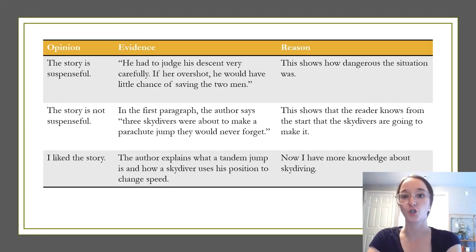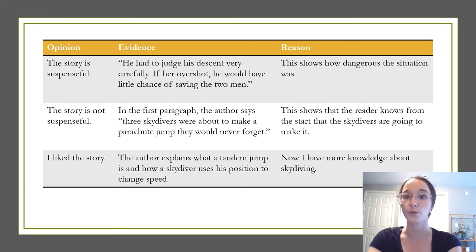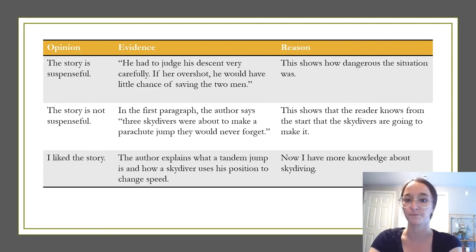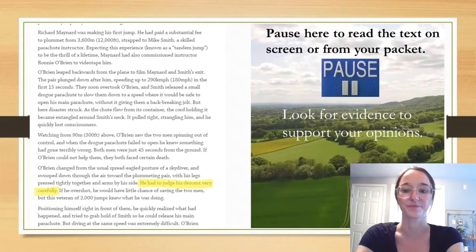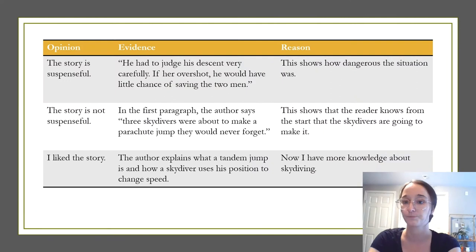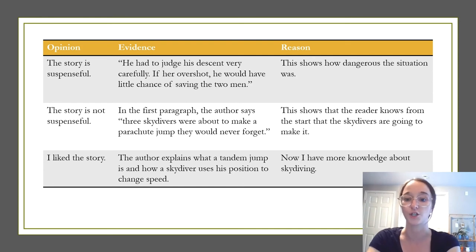This chart shows examples of how you could support your opinion with evidence from the text and also give reasoning to explain. For example, if you think that the story is suspenseful, some evidence you might have underlined would be the quote: 'He had to judge his descent very carefully. If he overshot, he would have little chance of saving the two men.' The reason this evidence supports the opinion that the story is suspenseful is because it shows how dangerous the situation was.